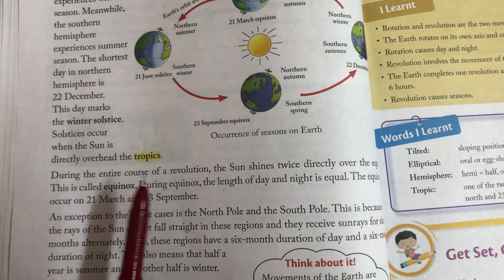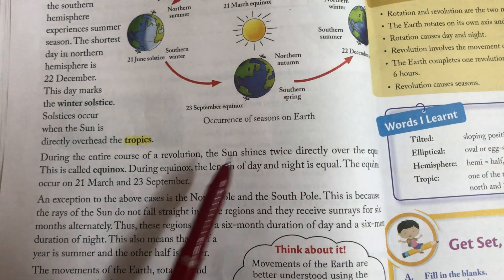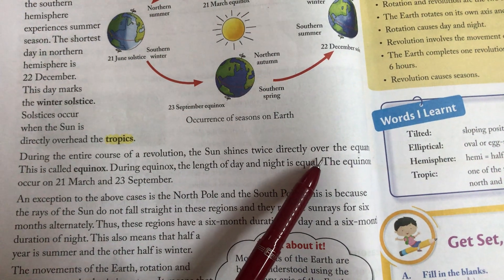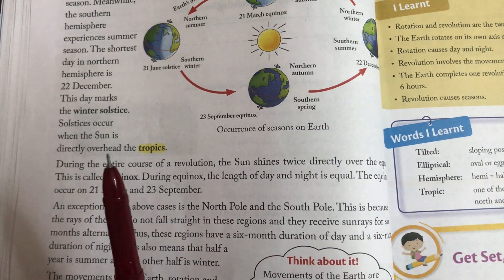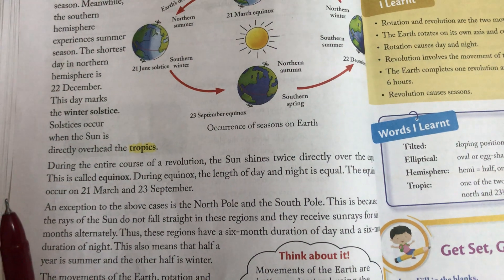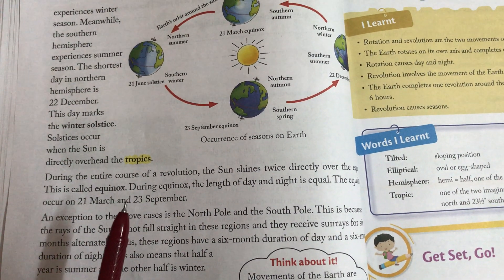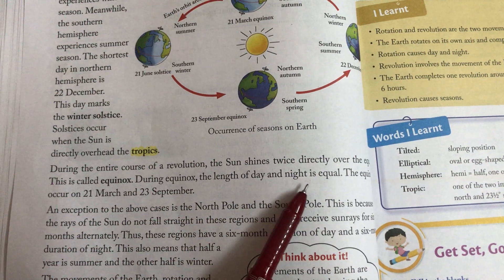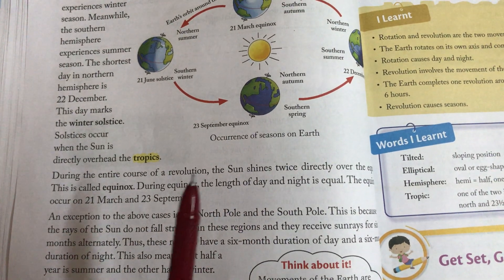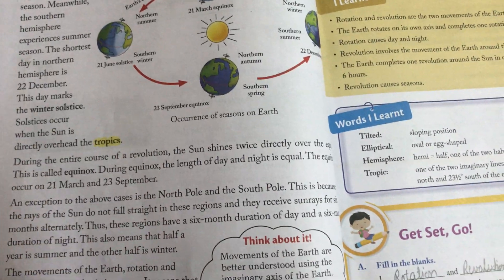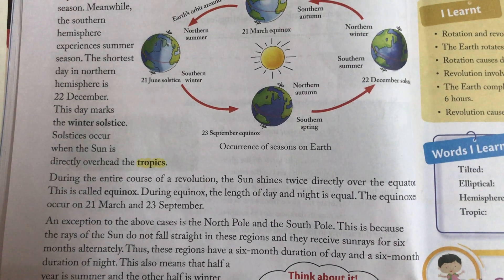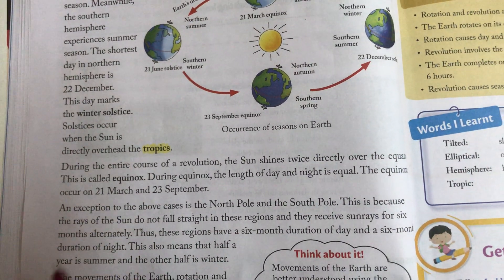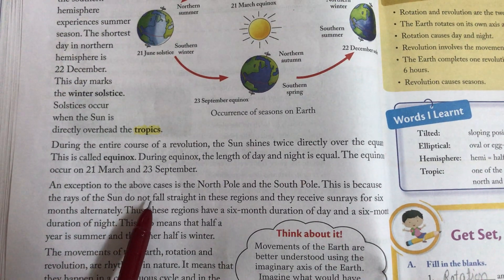Solstices occur when the sun is directly overhead the tropics. During the entire course of a revolution, the sun shines twice directly over the equator — this is called an equinox. During equinox, the length of day and night is equal. उस दिन दिन और रात का समय बिल्कुल समान होता है। The equinoxes occur on 21st March and 23rd September.